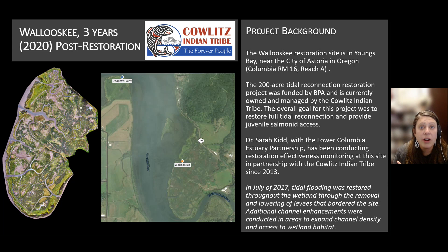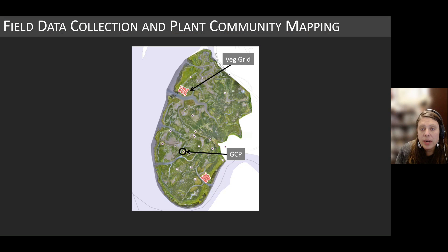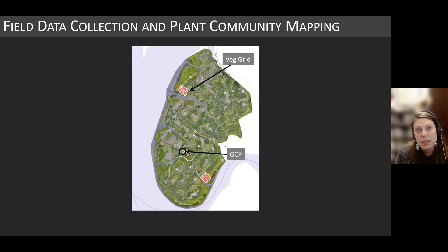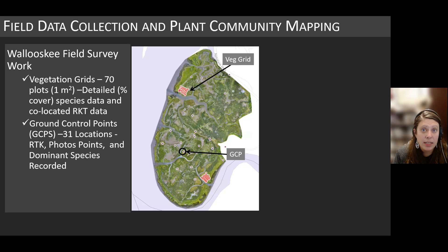The Woluski project is a very tidal site located in Youngs Bay in Astoria, and I've actually been collecting data on this site since 2013. Here is the overall site map. You can see that the red dots are our vegetation grid — the classic method of collecting really detailed vegetation data. The purple dots are ground control points, or GCPs, which are collected to inform the drone data processing. We need these ground control points to produce accurate elevation maps of the site. We also collect photo points of these locations and make notes about dominant plant community classifications.